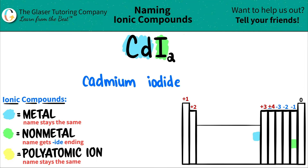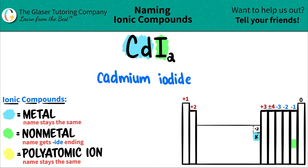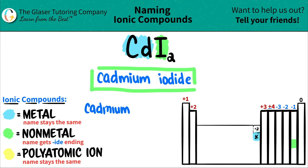Now the next part depends on your teacher or professor's preference. Usually we would check to see if we need a Roman numeral. However, cadmium exists very closely like zinc does, and zinc always has a plus two charge — that never changes. The same thing for cadmium: cadmium always has a plus two charge. So for some teachers and professors, the Roman numeral isn't needed because cadmium only has one oxidation state. However, some teachers or professors may want you to put the Roman numeral. So I would say the top answer is cadmium iodide, but you might see it as cadmium(II) iodide.